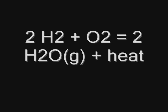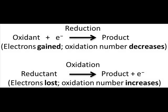Let's take a look at a simple redox reaction. Here we have two moles of hydrogen molecules, reacting with one mole of oxygen. This produces two moles of water molecules and some heat. Oxygen is being reduced while hydrogen is being oxidized.